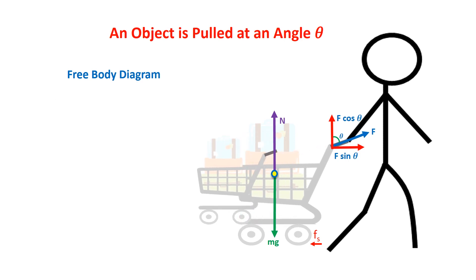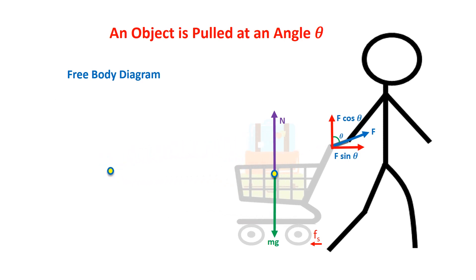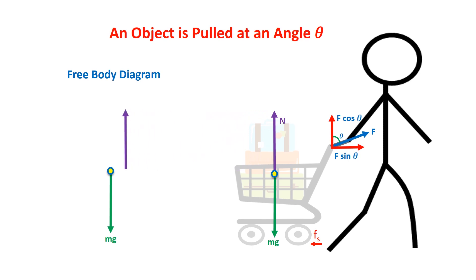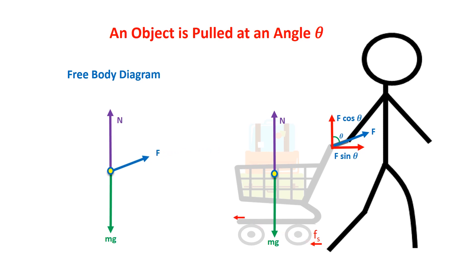In the free body diagram, we take the object as a point. Mg is the downward force acting on the object. N is the normal force acting upward. F is the direction of the force applied on the body, and F s is the static friction.